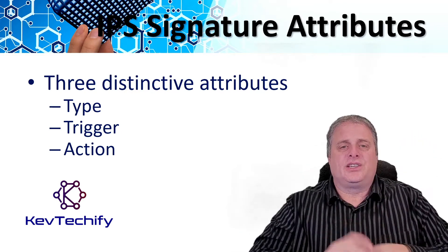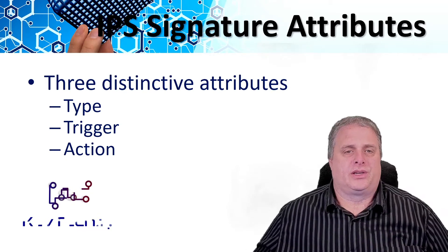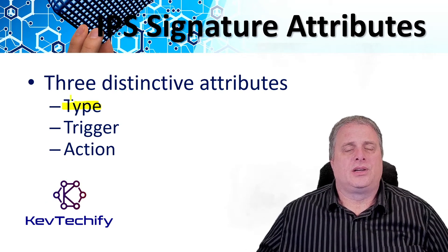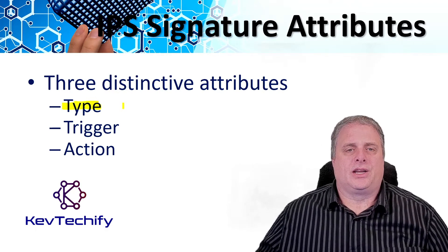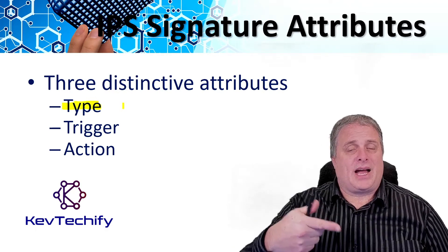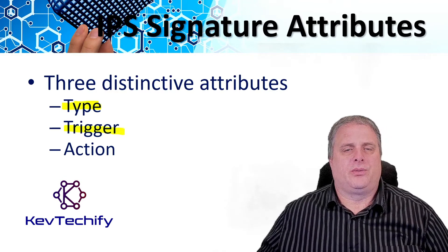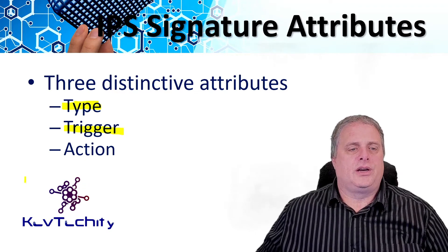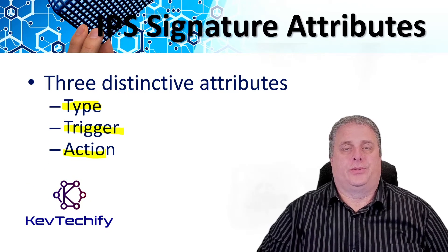These signatures have three distinctive attributes. The first is the type of signature — it can either be atomic or composite. The next attribute is the trigger, also called alarms. And the third one is action — what will that prevention system do?